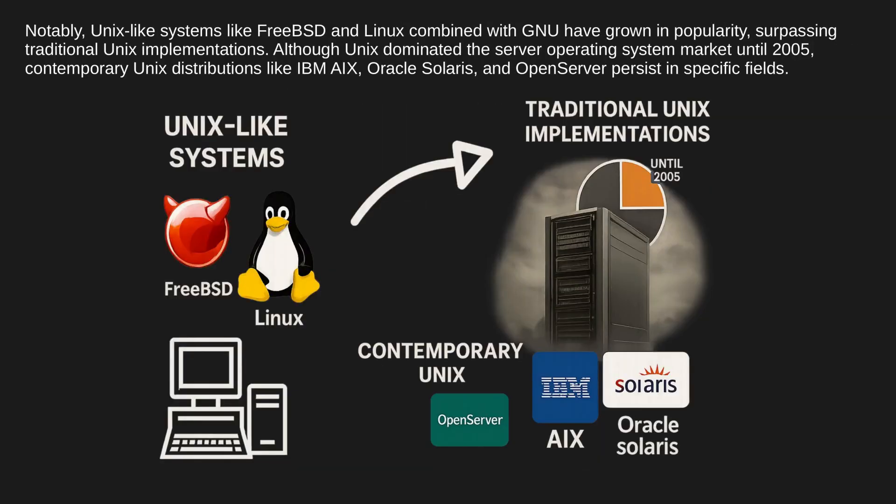Notably, Unix-like systems like FreeBSD and Linux combined with GNU have grown in popularity, surpassing traditional Unix implementations. Although Unix dominated the server operating system market until 2005, contemporary Unix distributions like IBM AIX, Oracle Solaris, and OpenServer persist in specific fields.